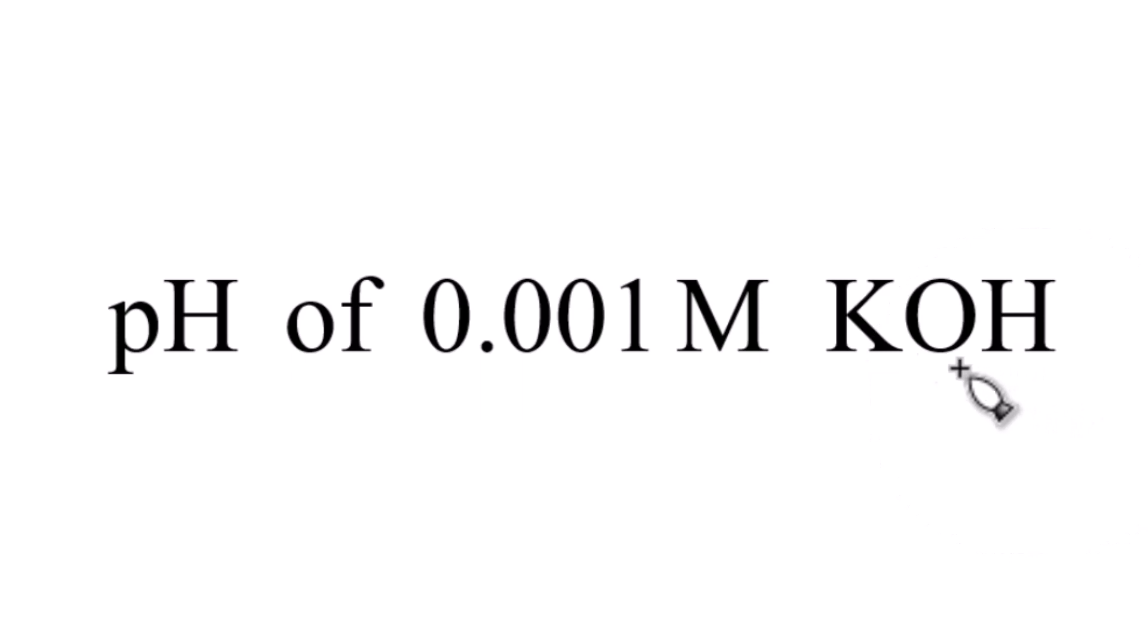So with that, we'll have K, when this dissociates completely because it's a strong base, we'll have K plus, and the whole thing here will be OH minus.